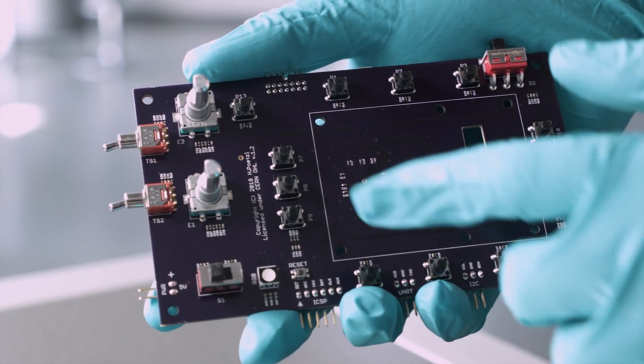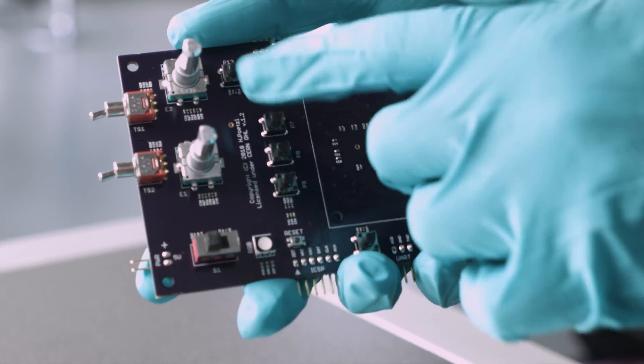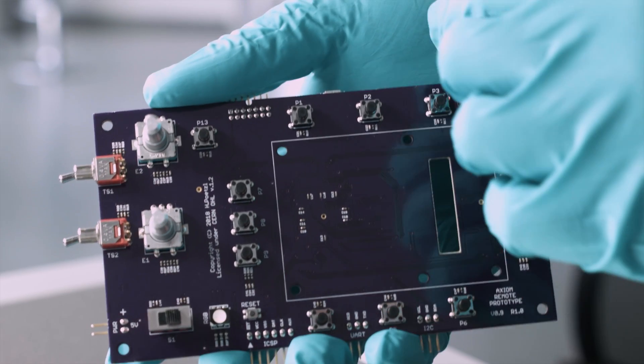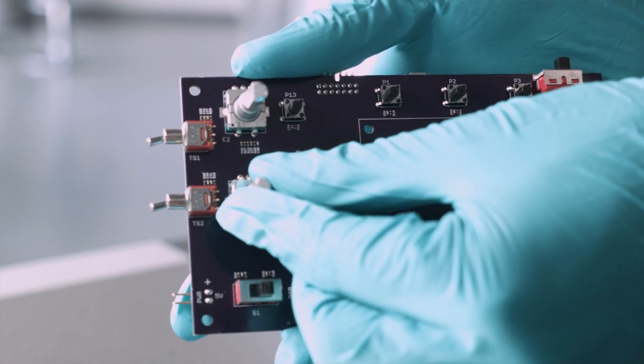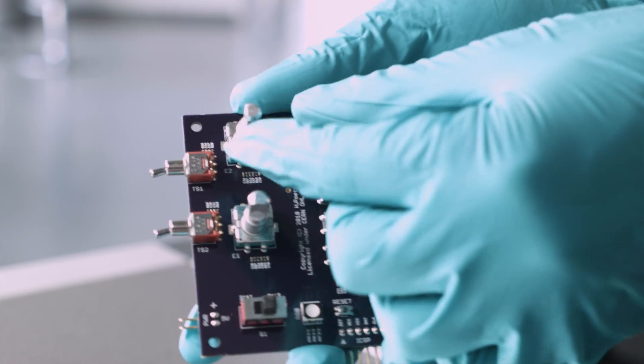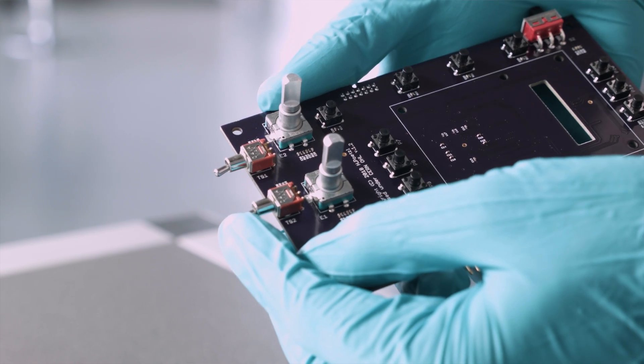Nice. So next steps. We will 3D print an enclosure. We'll program, bring up again the hardware. This is rather low-tech compared to most of the other hardware we built. No FPGA involved. So that should be pretty straightforward hopefully.